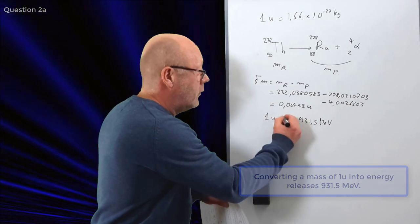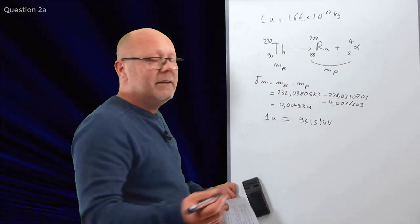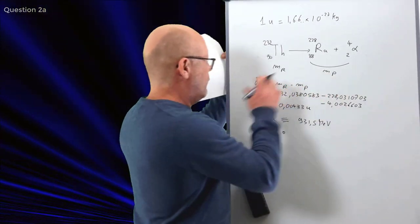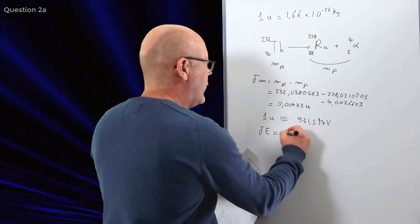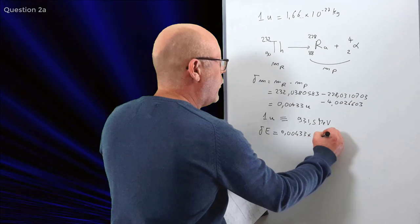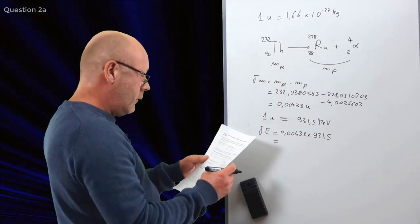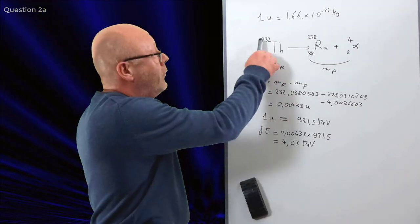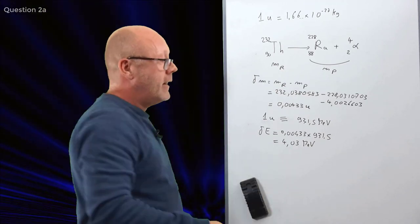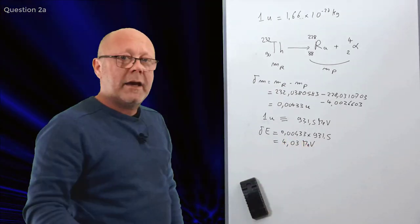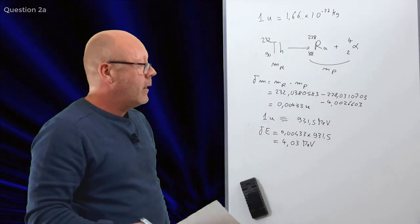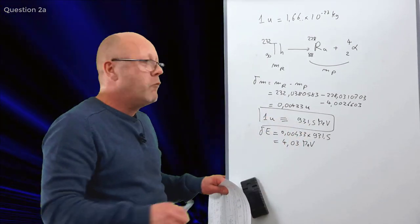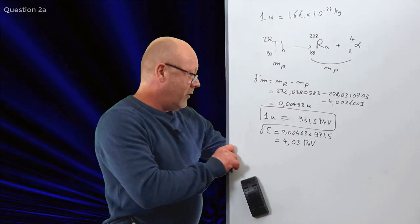Now, what is the relation between mass and energy? E equals mc squared. And if we apply 1u as mass, we can find an equivalence between 1u and 931.5 MeV. 1u is actually equivalent to 931.5 MeV. So, it's easy to find the energy released, which corresponds to the mass that has disappeared. It's going to be 0.00433 by 931.5, which gave me 4.003 MeVs. So, each time a thorium-232 decays into a radium-228, it releases 4.03 MeV. That's the answer to the question.